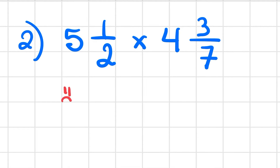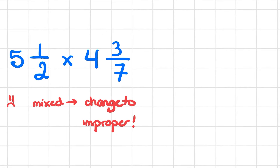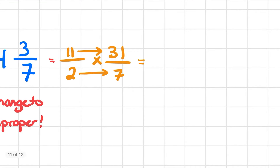This next question has a mixed fraction, which we don't like. So we're going to have to change it to improper, because that's the only way we can work with it. My first fraction becomes 11 over 2, and my second fraction becomes 31 over 7. Now I can go ahead with my multiplication since it's not mixed anymore. Multiplying across the top and bottom gives me a big number — 341 over 14.